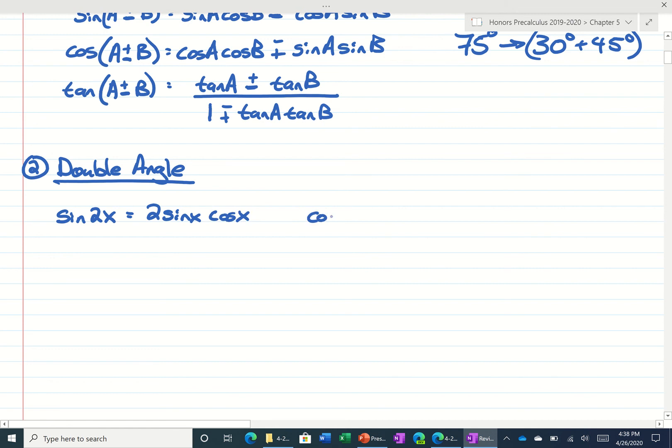For the cosine of a double angle, we could use three different formulas. One would be cosine squared of x minus sine squared of x. Another formula we could use, using a Pythagorean identity for substitution,